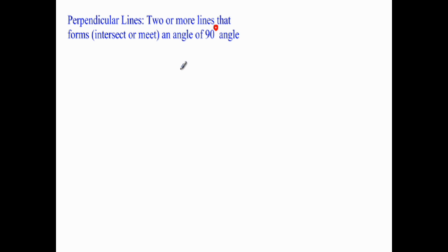Both lines are perpendicular to each other, or we could say they intersect or meet at an angle of 90 degrees. Now let's look at a quick example.